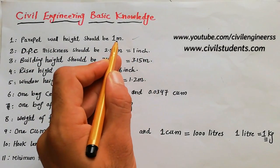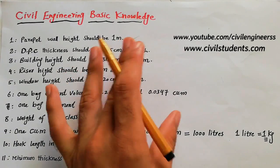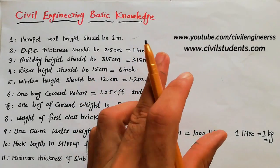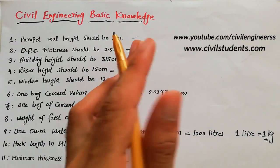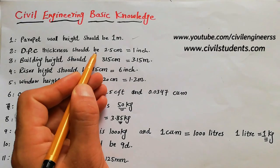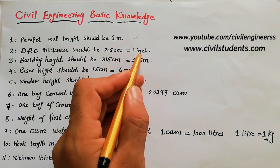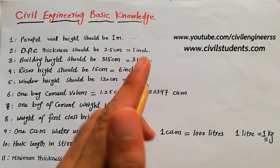The other one: DPC thickness. Many students don't know what the standard thickness for DPC is. So DPC thickness should be 2.5 centimeters, which means 1 inch. Okay, don't provide less than 2.5 centimeters DPC.